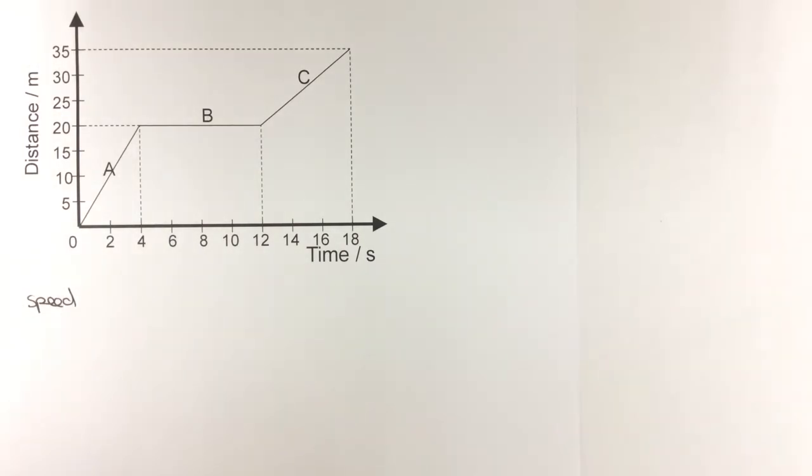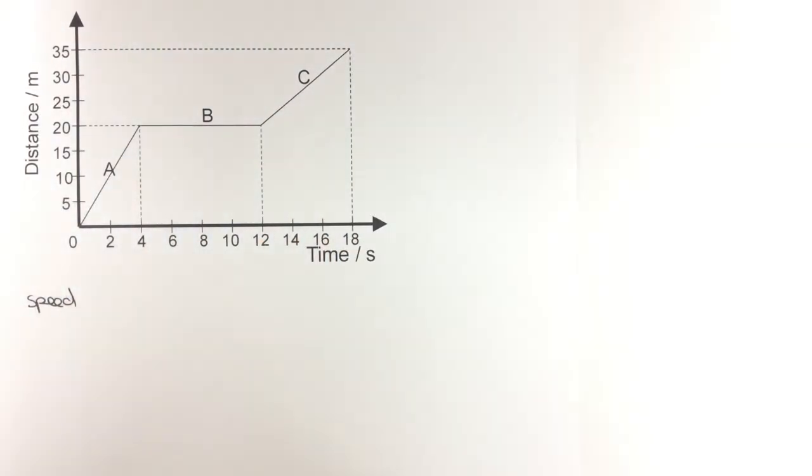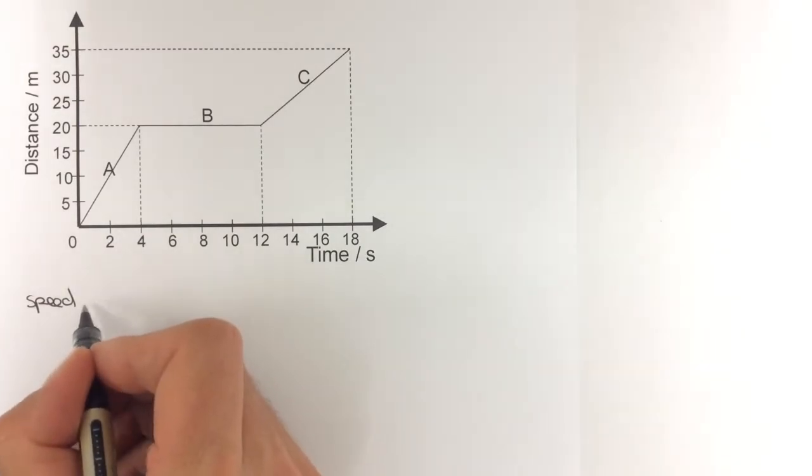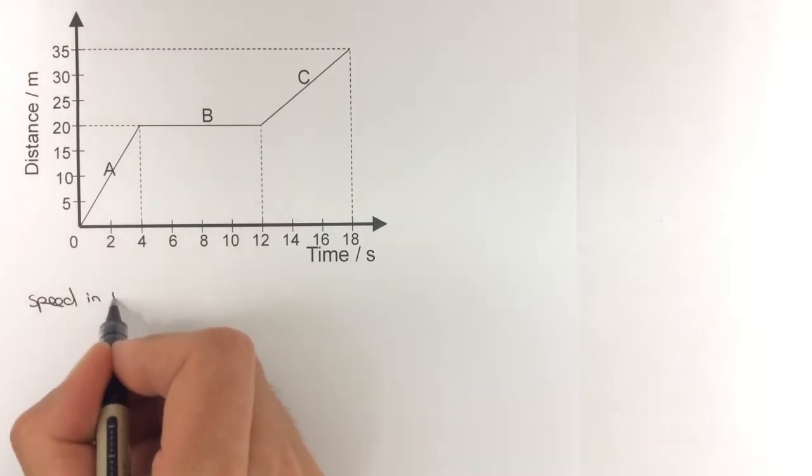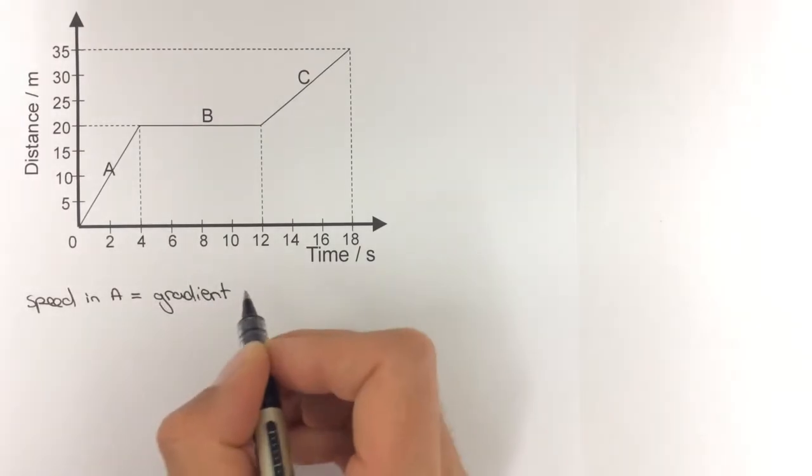I'm going to find the speed of the three different sections of this graph: A, B, and C. To find the speed during section A, I need to find the gradient of section A